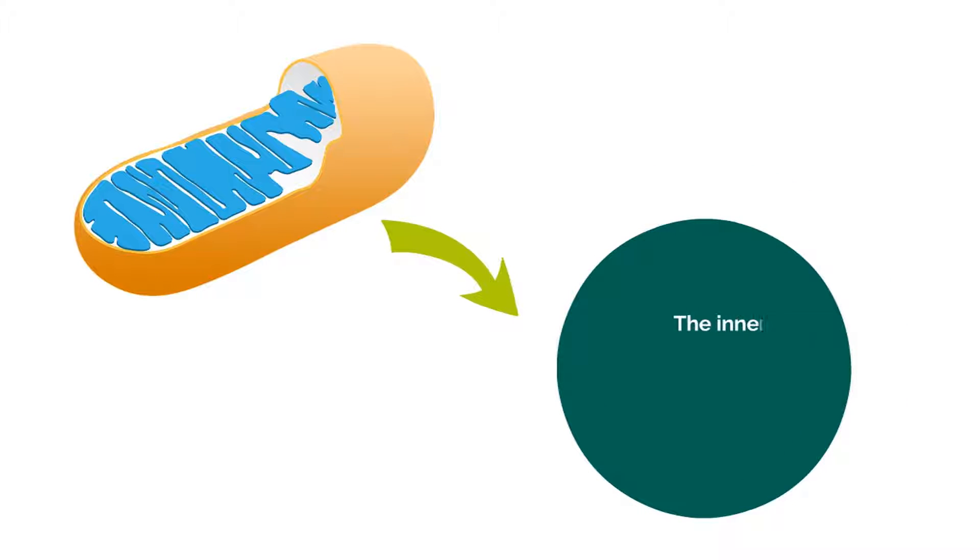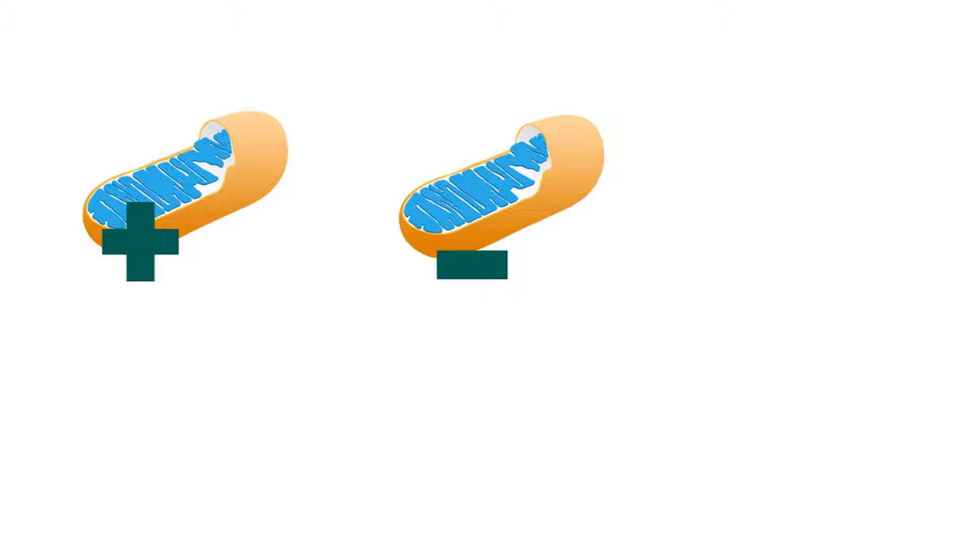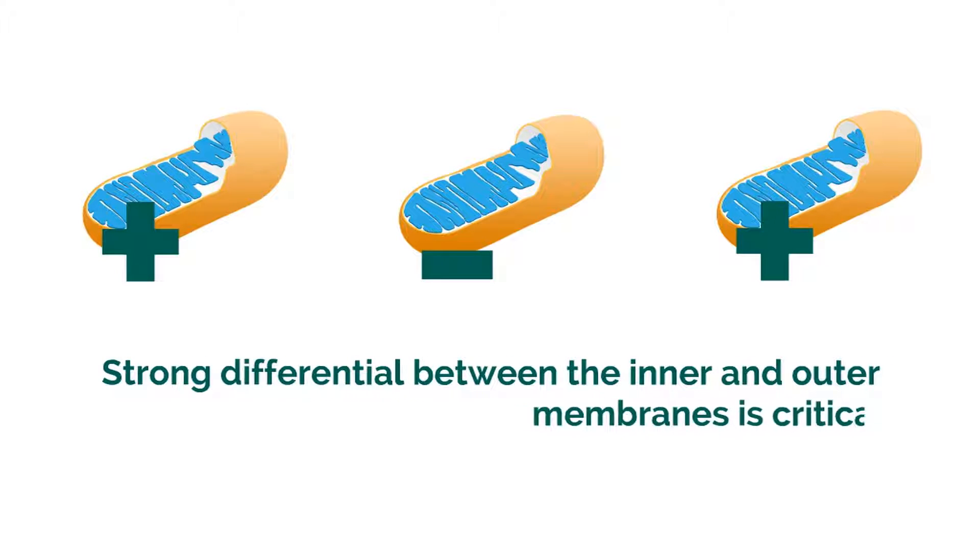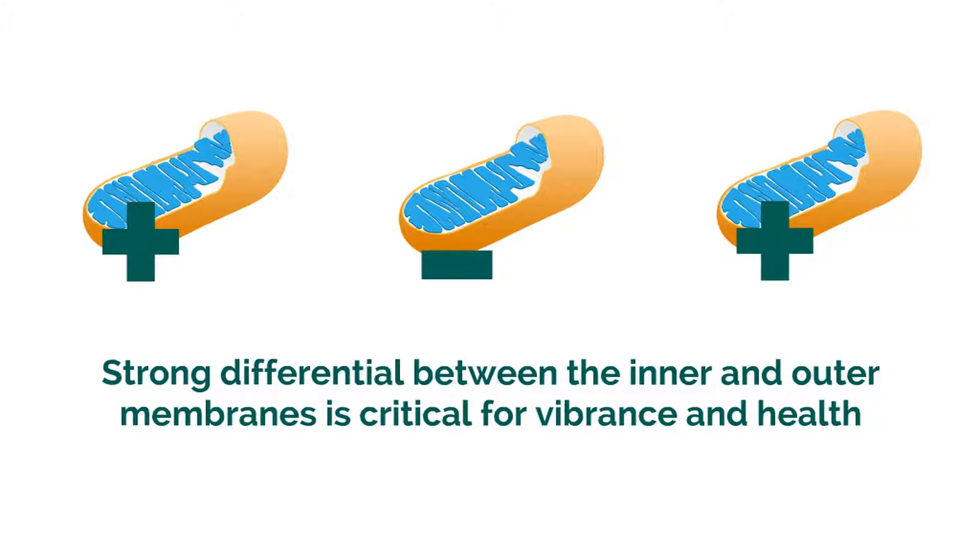The key objective must be to create a strong cell membrane potential. The cell membrane is made up of three layers. The inner and outer ones hold a charge. The centre is made up of fats creating channels which work a little like computer gates. In a healthy cell, the nucleus must hold a very positive charge. The inner cell membrane a negative charge and the outer cell membrane holds a positive charge. A strong differential between the inner and outer membranes is critical for vibrance and health.